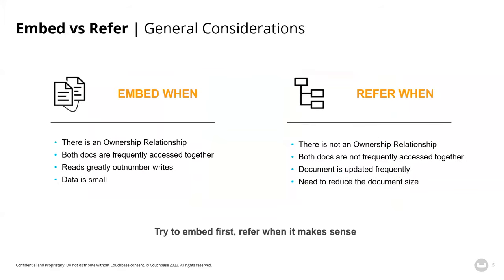There are many things to think about in JSON modeling, but the most difficult decisions often boil down to — in my experience anyway — embed versus refer. In the relational world, it's always refer: foreign key, separate tables, and the overhead that goes with that. In the JSON world, you can choose one or the other or both, and there are benefits to each approach, and you can use a combination.